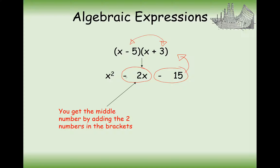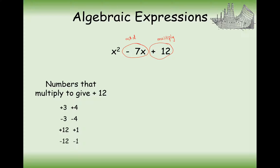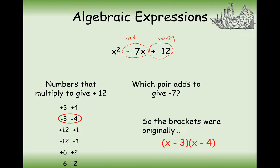If it was plus 5 and minus 3, this would be a positive here, so it's really important what sign goes in front of your values. Remember: the middle term is what we need to add to make, and the back term is what we need to multiply to make. So let's think of the pairs of numbers that make 12 when multiplied but minus 7x when added. We could have 3 and 4, or minus 3 and minus 4, 12 and 1, minus 12 and 1, also 6 and 2, and minus 6 and minus 2. Checking which pair adds to make minus 7 — it's minus 3 and minus 4. So x minus 3, x minus 4 is our final answer.